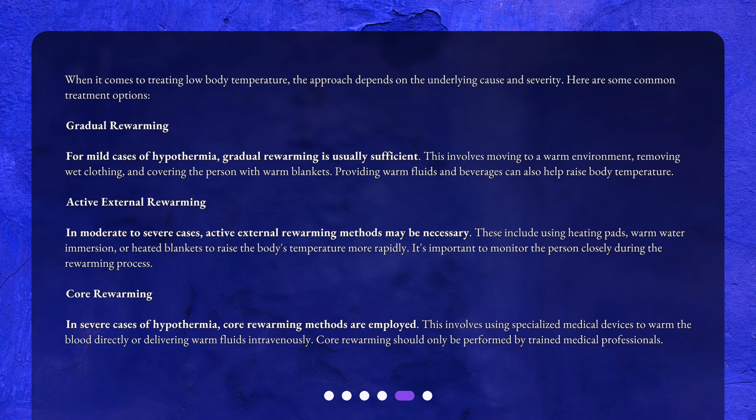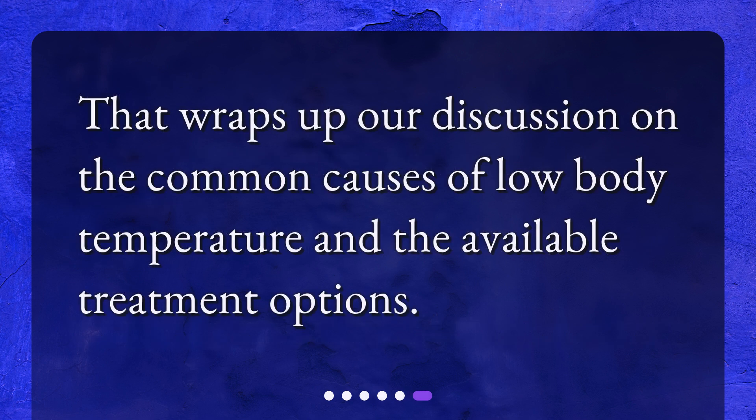Core re-warming. In severe cases of hypothermia, core re-warming methods are employed. This involves using specialized medical devices to warm the blood directly or delivering warm fluids intravenously. Core re-warming should only be performed by trained medical professionals. That wraps up our discussion on the common causes of low body temperature and the available treatment options.